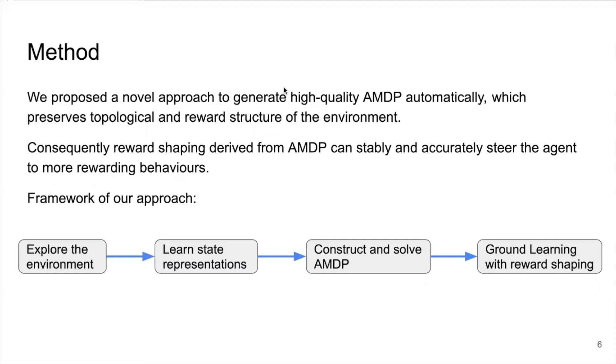The framework of our approach has four phases. We start with exploring the environment, then learn state representations based on experiences during exploration, then construct and solve the AMDP. Finally, the solution of AMDP is used for reward shaping to guide the ground learning process.